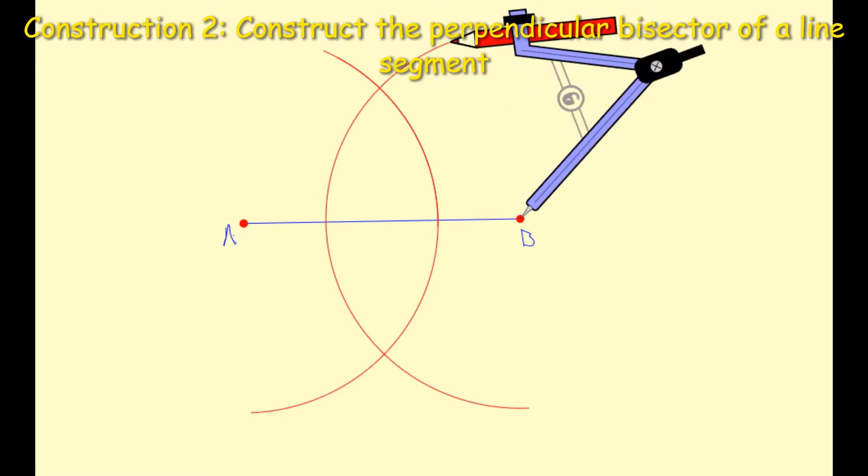You can see here that they have intersected, and I'm going to label those two points. I'm going to label those points X and Y. Now you know that you don't always have to be labeling the exact same as me—A's, B's, X's, and Y's—you can call them whatever you want to call them.